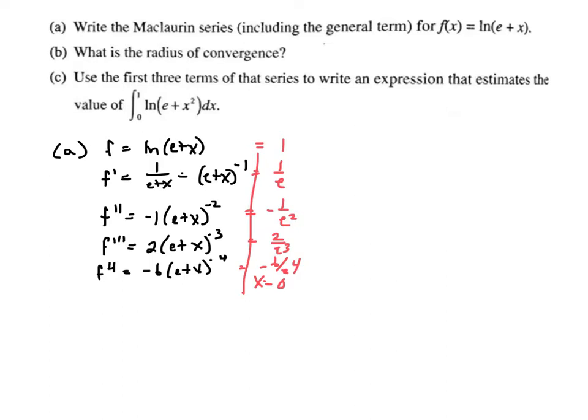So I'd go the 0 derivative, 0 factorial, x minus 0 to the 0. First derivative, 1 factorial, x minus 0 to the 1st. Second derivative, 2 factorial, x minus 0 squared. Third, and x minus 0 cubed. And I made the 4th, so I might as well go for it and do the 4th, x minus 0 to the 4th.